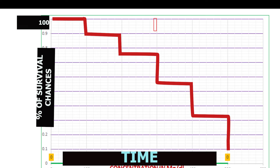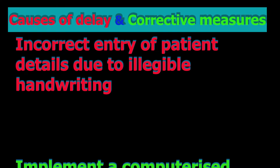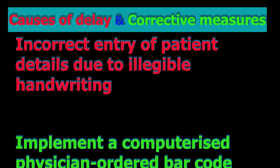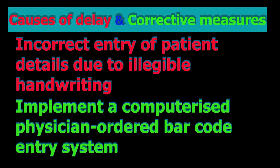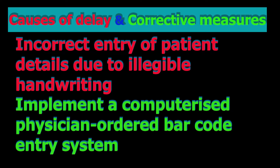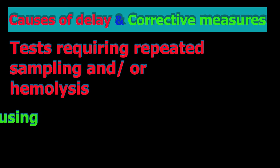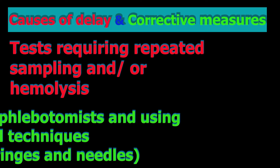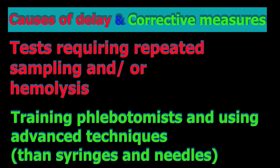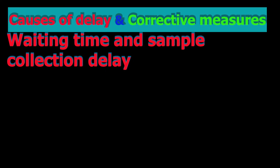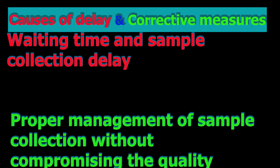Early reports from the emergency department can save the patient — survival chances are better with early reports. Intensive care unit samples are treated as stat samples, and turnaround time is very important. Coronary care unit samples are also stat samples; examples include cardiac markers. For operation patients, lab results drive major diagnostic decisions, for example frozen sections in histopathology samples.